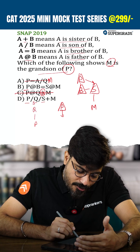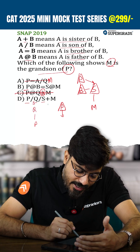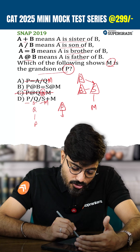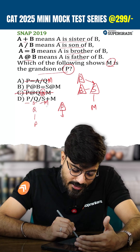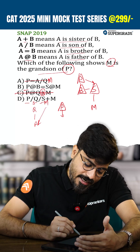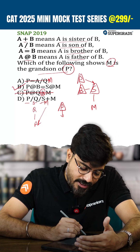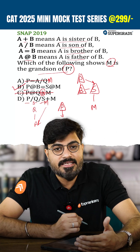In option D: P / Q / S means P is the son of Q and Q is the son of S, and S + M means S is the sister of M — so M as grandson does not come directly. The only option which meets the requirement is B.